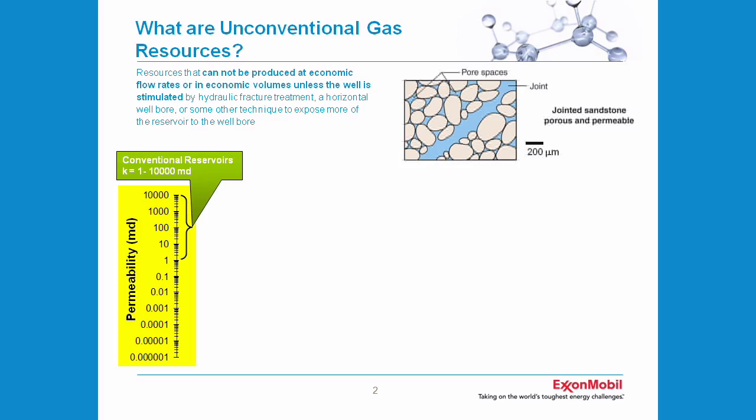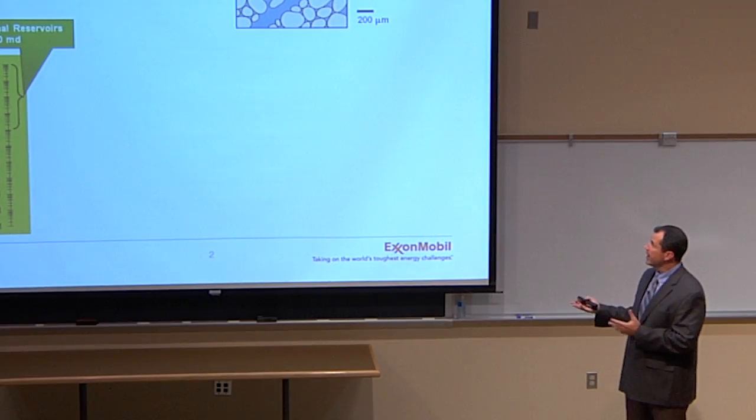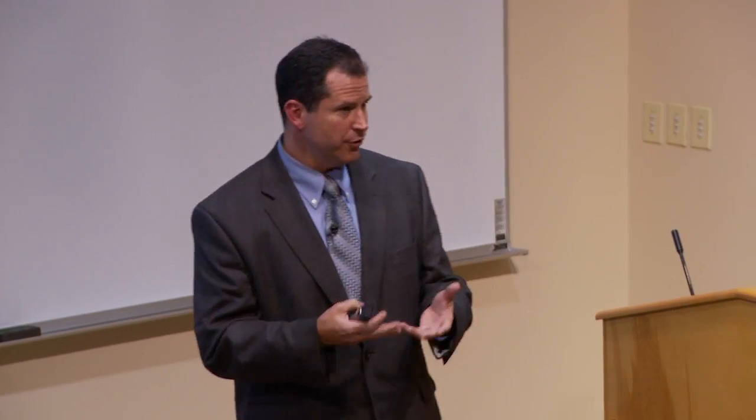You drill a well into rocks like this that are buried in the subsurface and introduce a pressure drawdown across the wellbore, and the fluids which are contained in the pores of this rock will flow into the wellbore, and you can make an economic well.